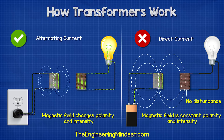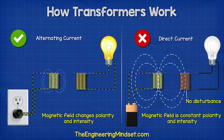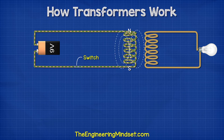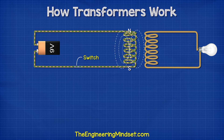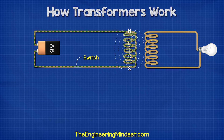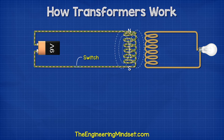So it will not disturb the electrons in the secondary side. The only time it will create an electromotive force using direct current is briefly when the switch is opened and closed, because this energizes and de-energizes the magnetic field of the coil, so it is therefore changing.